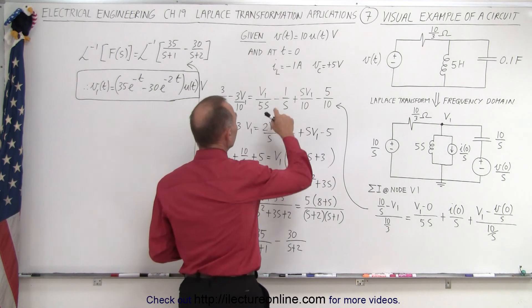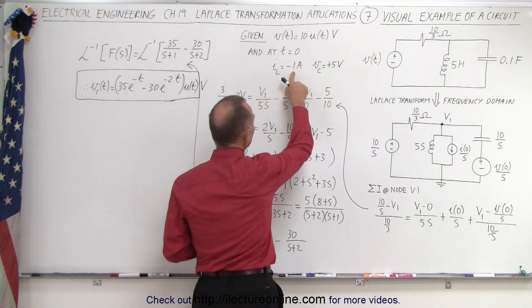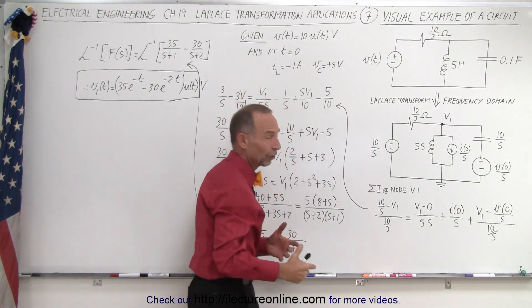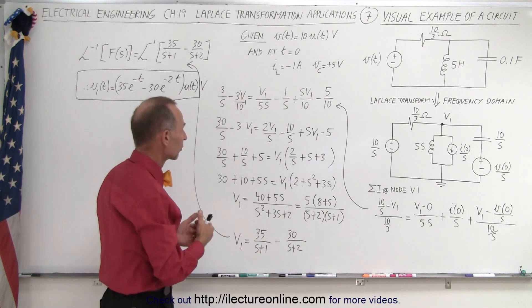At time equals zero, the current through the inductor is negative 1 amp, and the voltage across the capacitor is plus 5 volts. These are the initial conditions of the inductor and capacitor.